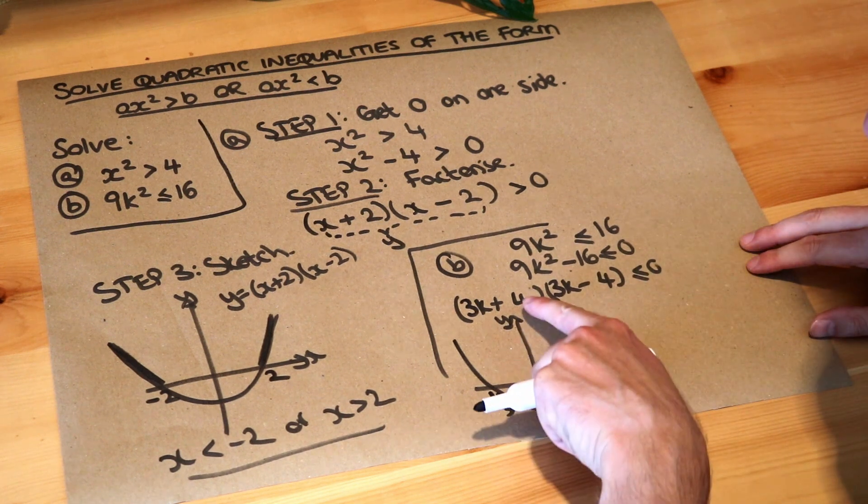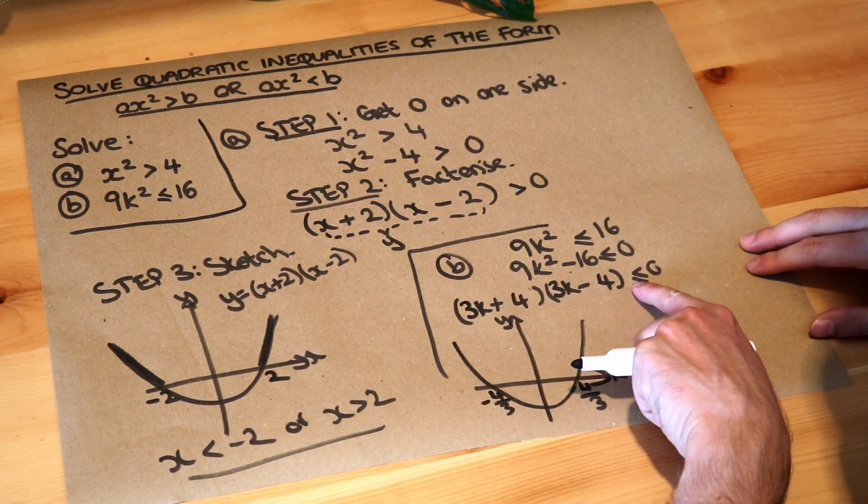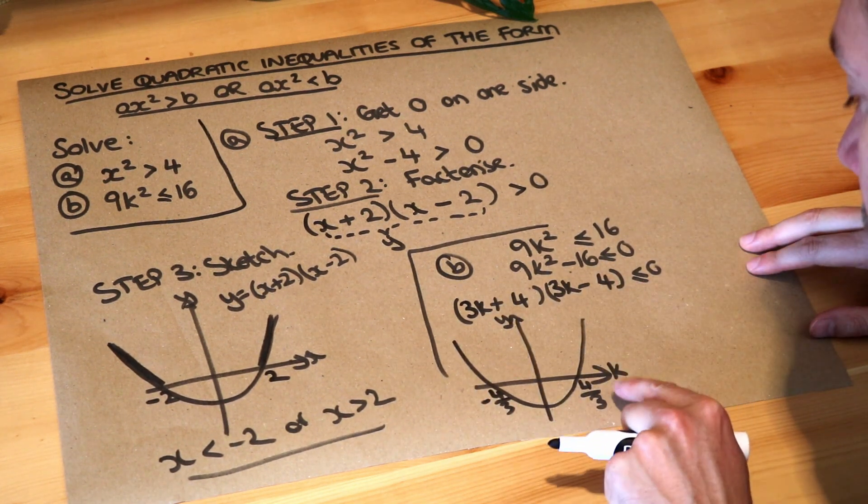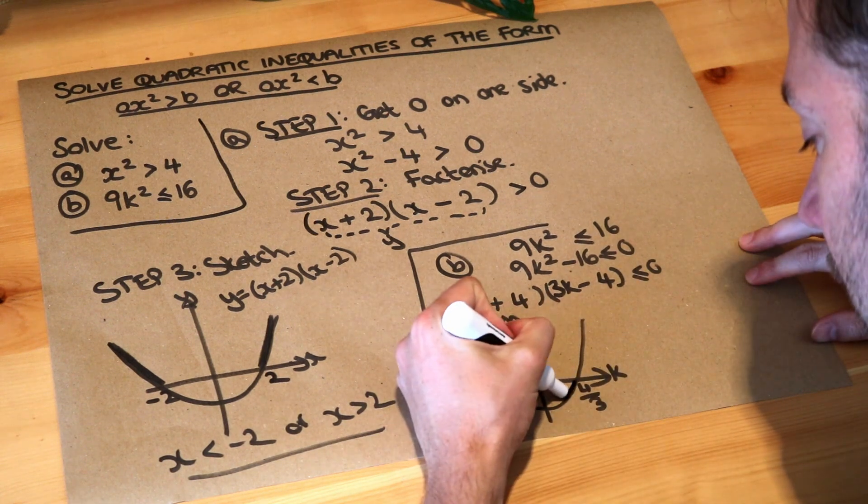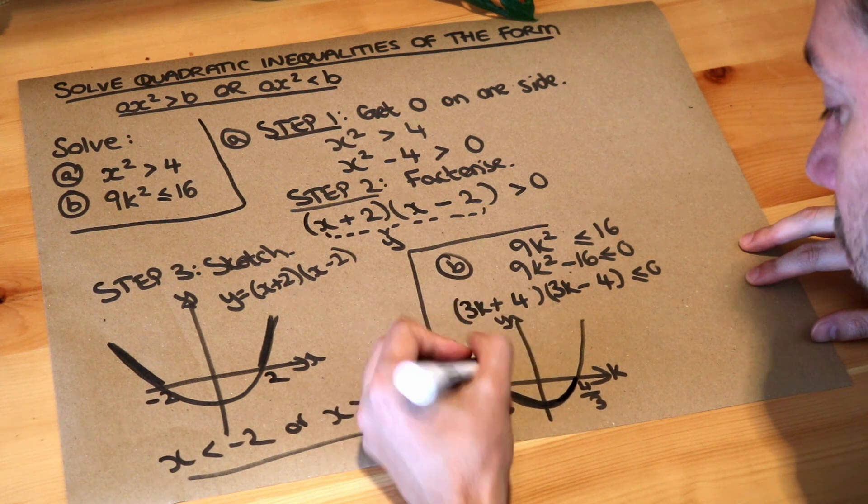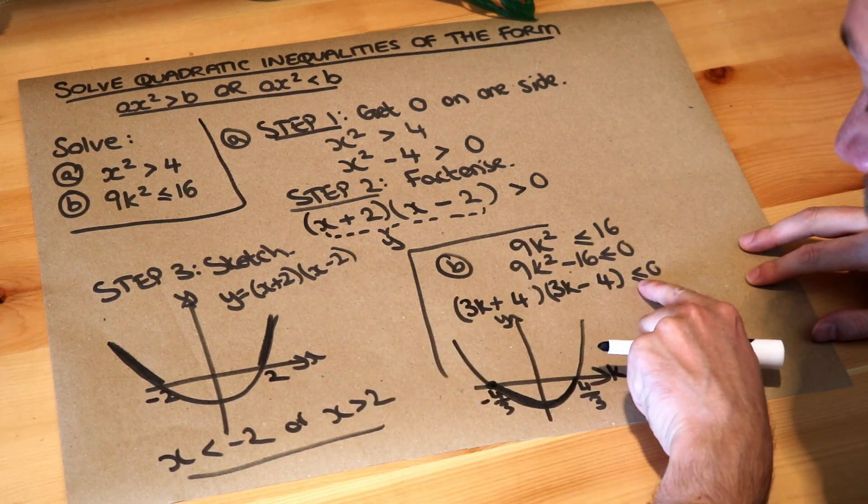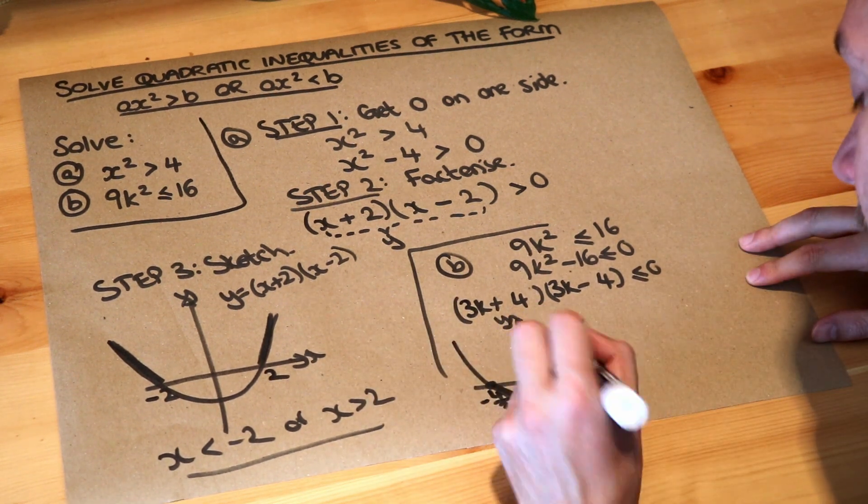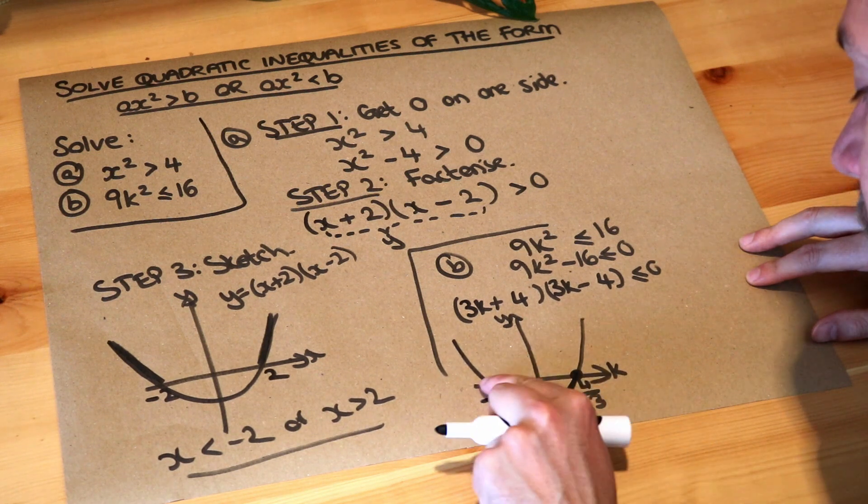Now we're saying that the y value—this is the y value—is less than or equal to 0. Where's the y value less than or equal to 0? It's this bottom part of the graph. That's where the y value is less than or equal to 0. But it can be equal to 0.